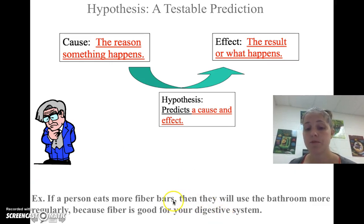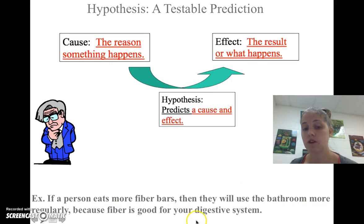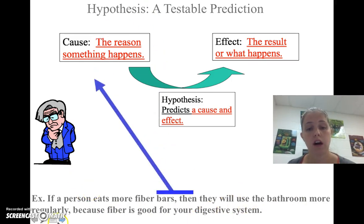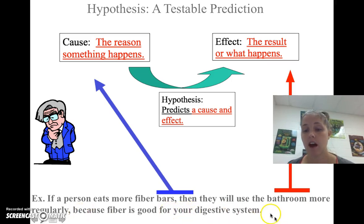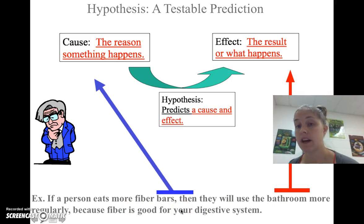Here's another example: if a person eats more fiber bars, then they will use the bathroom more regularly, because fiber is good for your digestive system. So our cause is the fiber bars, our effect is the number of times you use the bathroom, and our research indicates it's because our digestive system likes fiber.